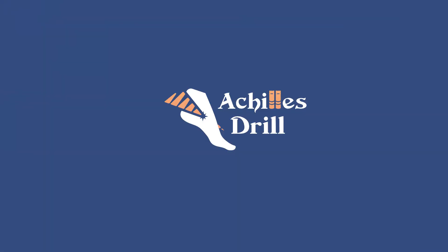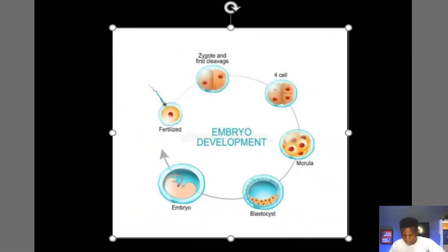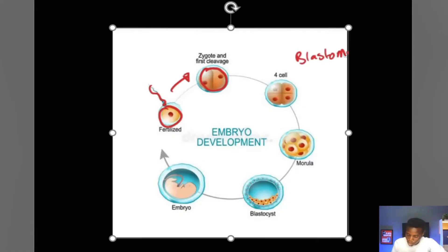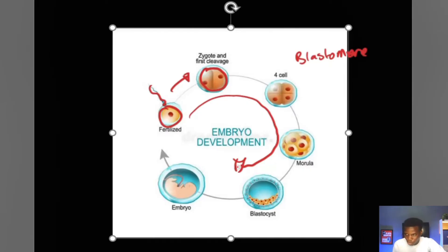Do stick with me to the end. One striking thing that happens in the first week of development starts with a sperm fertilizing an egg, then a zygote is formed. The zygote undergoes a series of mitotic divisions through the process of cleavage, giving rise to numerous cells called blastomeres. The morula will be formed, the blastocyst will be formed, and it will continue into the second week of development.